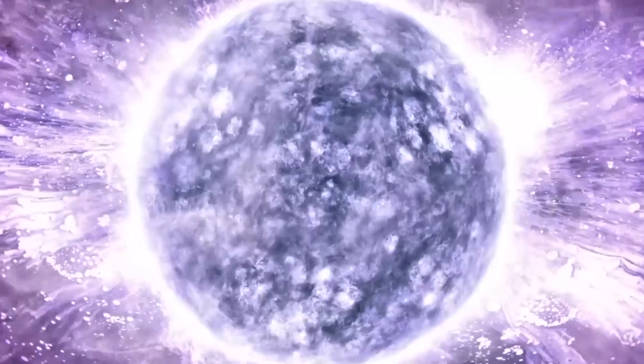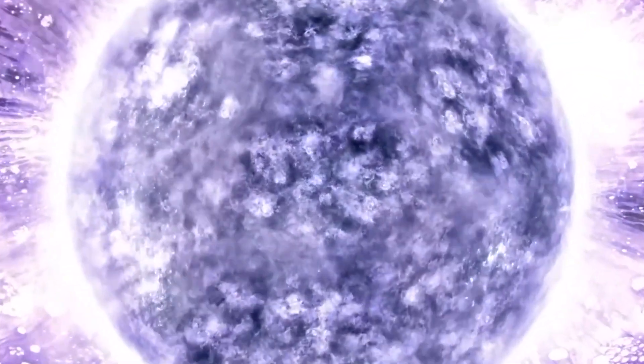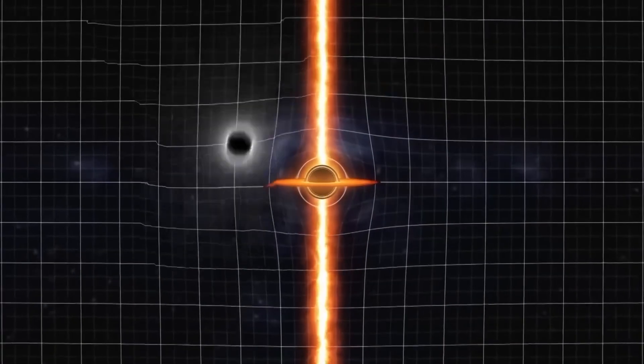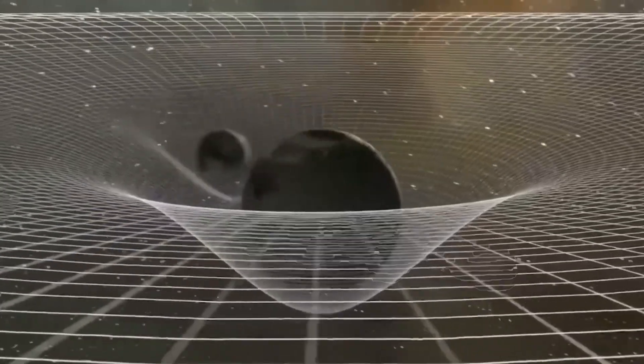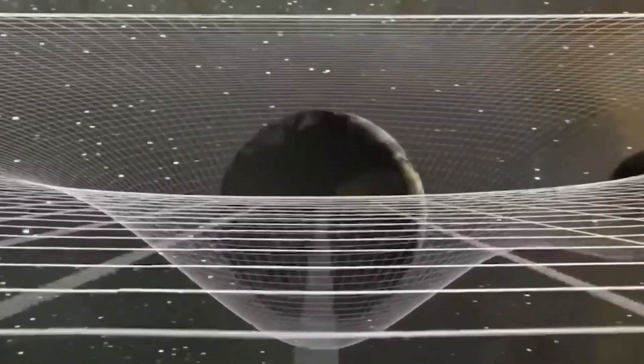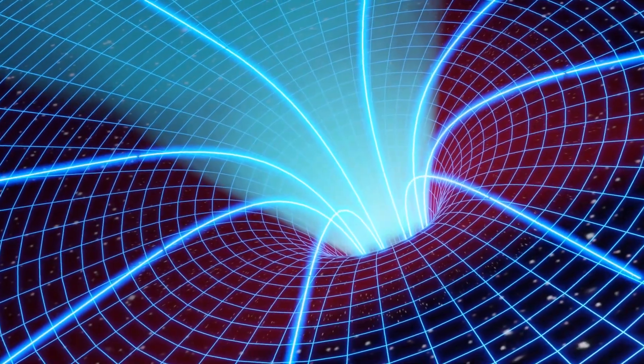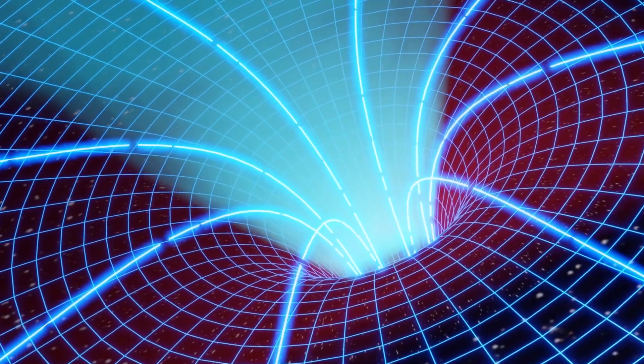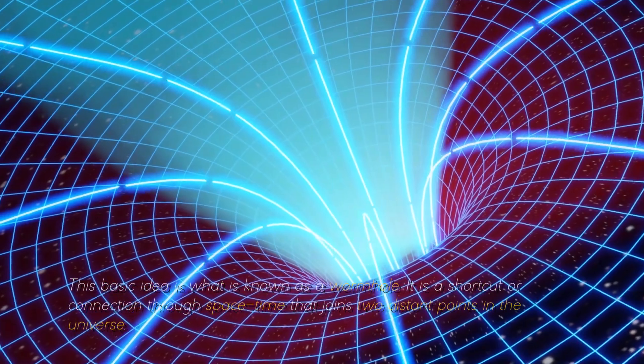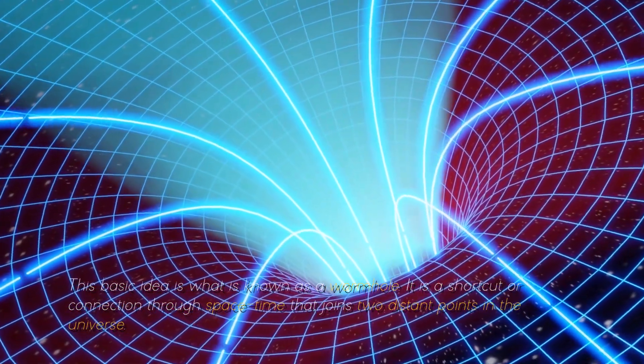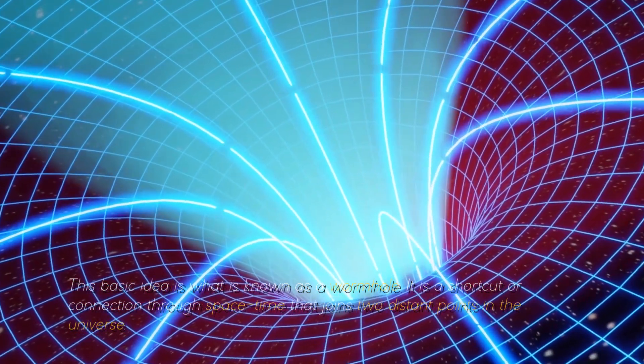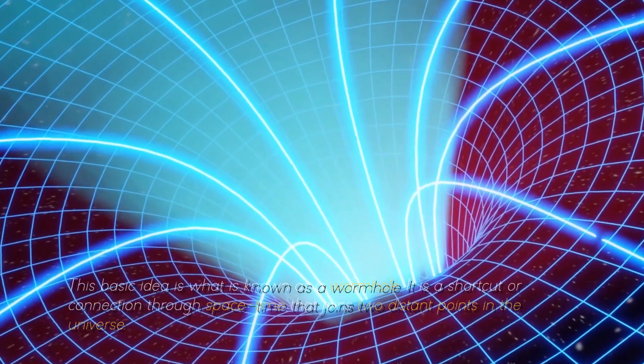To visualize this, we can imagine a sheet of paper representing space-time. If we place two points onto the paper and draw a line between them, we are representing how objects move through space-time. Now, let's consider folding the paper in half and creating a shortcut between those two points. This basic idea is what is known as a wormhole. It is a shortcut or connection through space-time that joins two distant points in the universe.